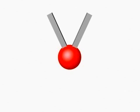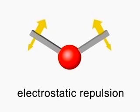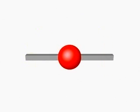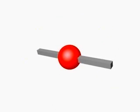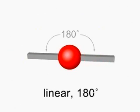The simplest case has two negative groups around a central atom. At any angle less than 180 degrees, electrostatic repulsions push the bars apart. Repulsions are minimized when the bars attain a linear arrangement.